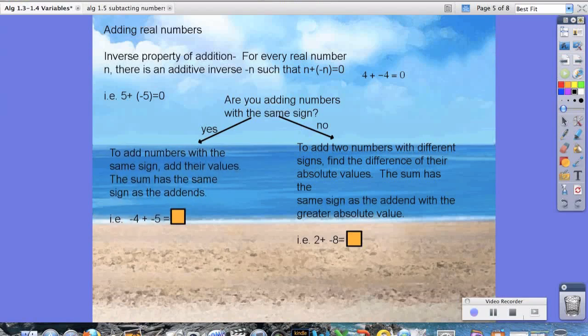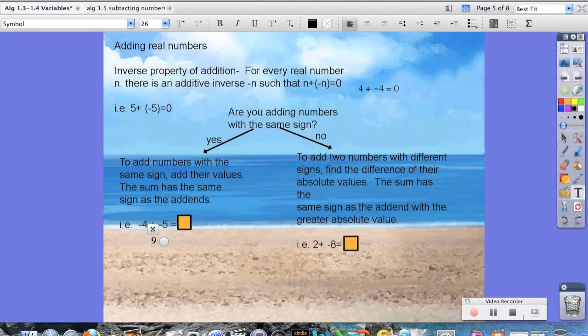if you look below, we have negative 4 plus 5. So notice they both have the same sign. So we're going to add them up. 4 plus 5 is 9. But both of those numbers are negative. So they're going to keep the sign. So negative 9.